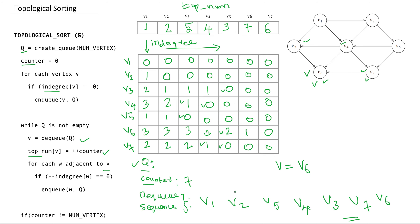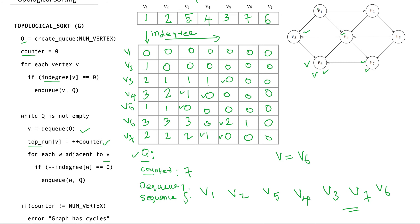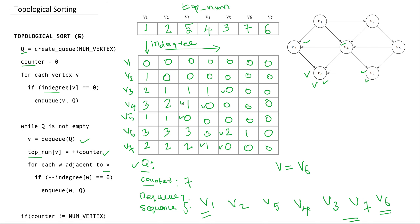In this ordering, V1 has in-degree 0 and is the first node, and V6 has no outgoing edges so it is last. This is the algorithm we demonstrated using this particular sequence, and I hope it is clear. Thank you.